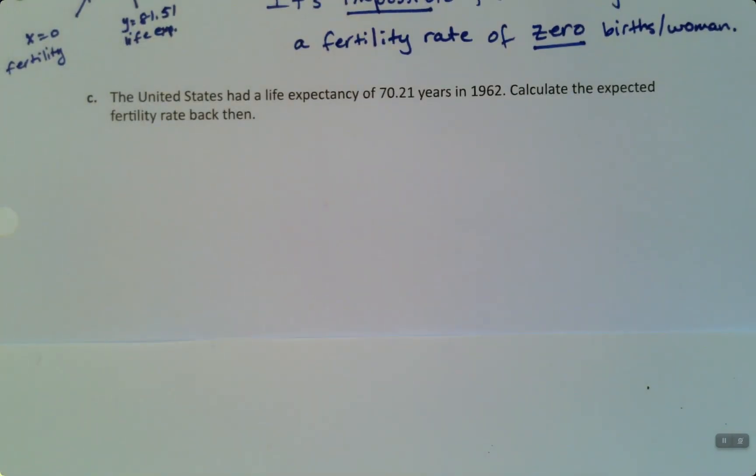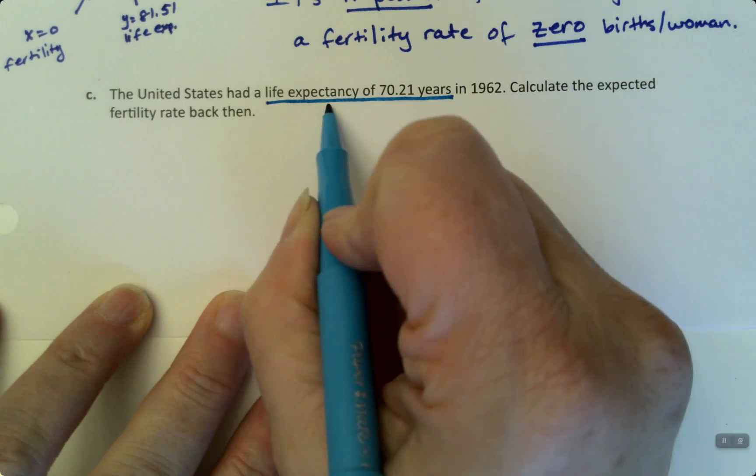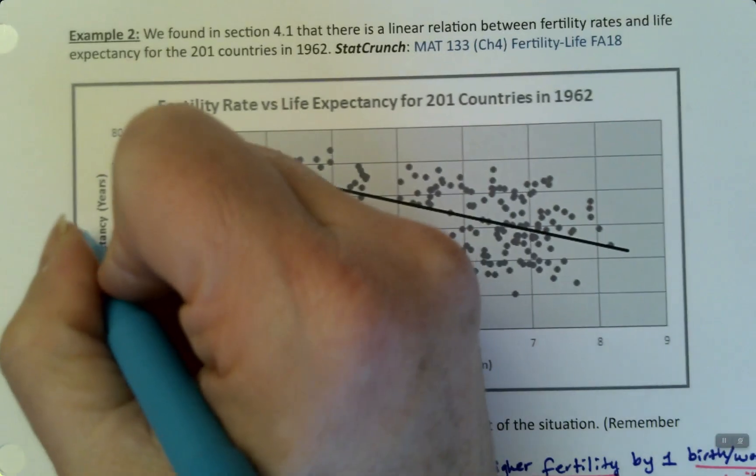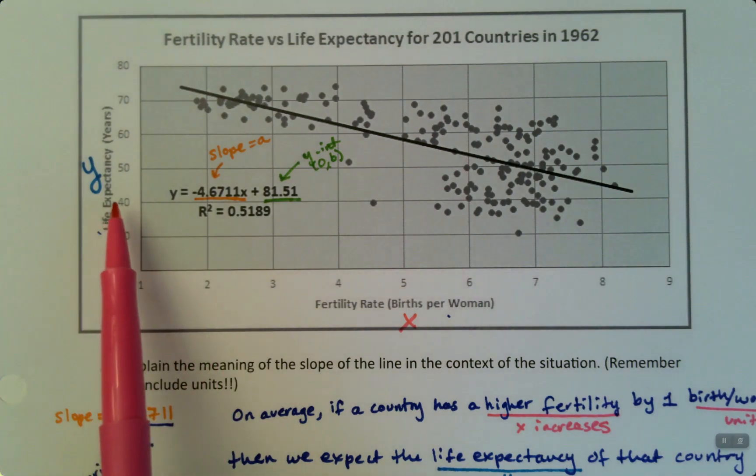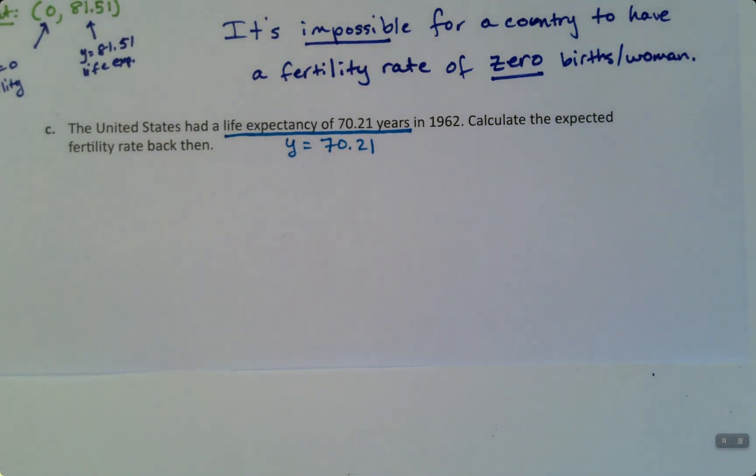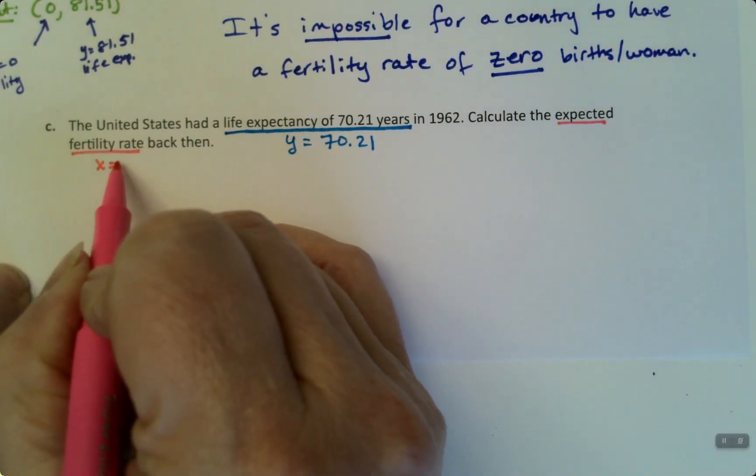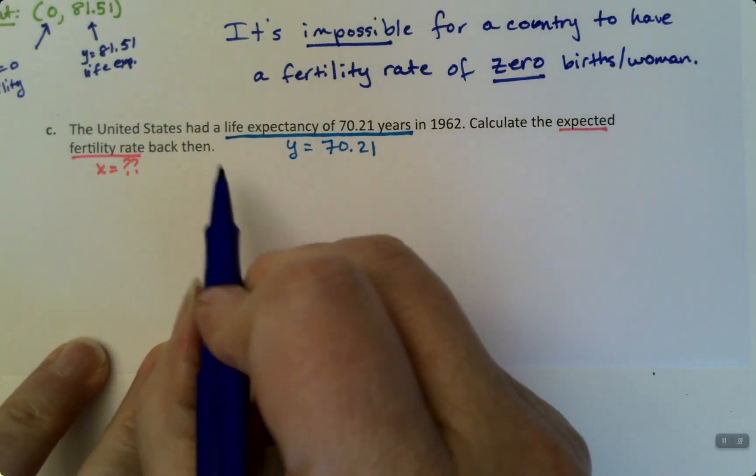All right, last bit. So suppose the United States had a life expectancy of 70.21 years in 1962. Calculate the expected fertility rate back then. Oh, crafty. Okay, so I'm going to be a little bit... We're not going to do a ton of these in the course, but you might have one. So you want to know how to do it. So life expectancy was the y, right? If you look up at the graph, maybe I should have labeled these. This is the y, this is the x, right? That's the way we draw these graphs. So life expectancy is the y. So when they say the life expectancy is 70.21, then they're giving you the y value, and they're asking you, calculate the expected fertility rate. In other words, find x. It's an algebra problem. It's a hidden algebra problem. All right. So now we're going to do that algebra problem.